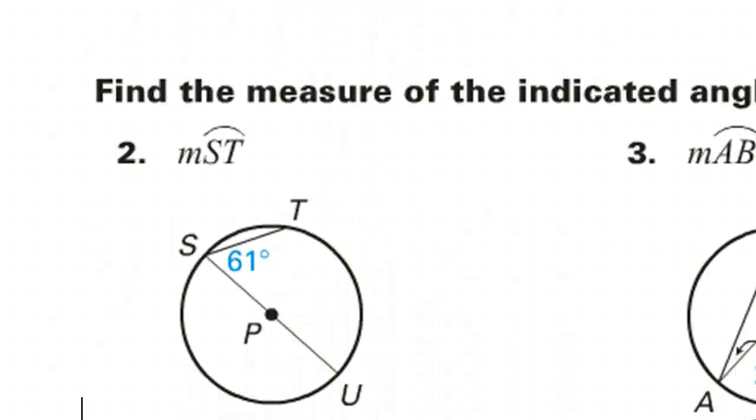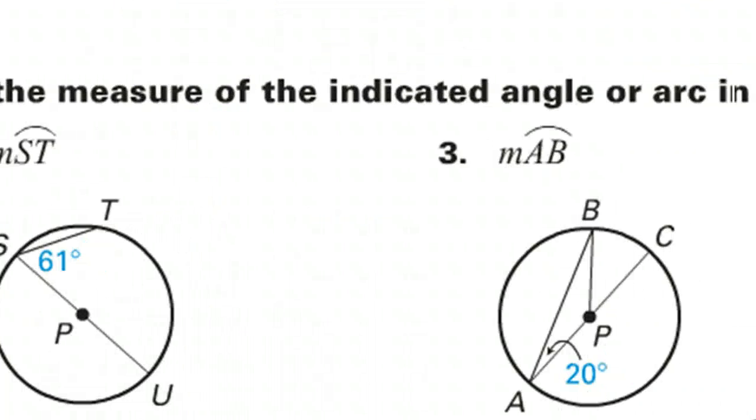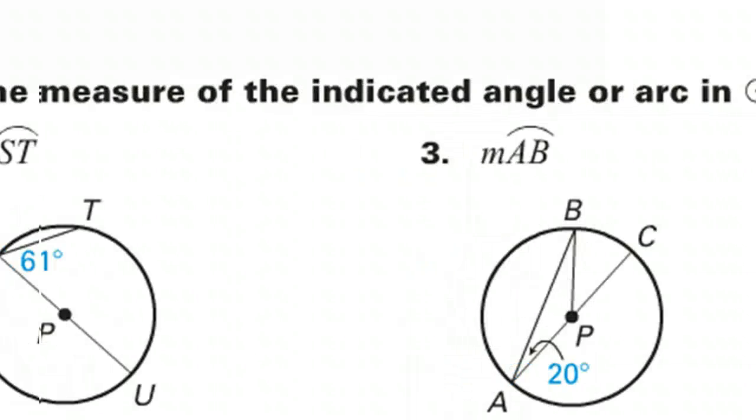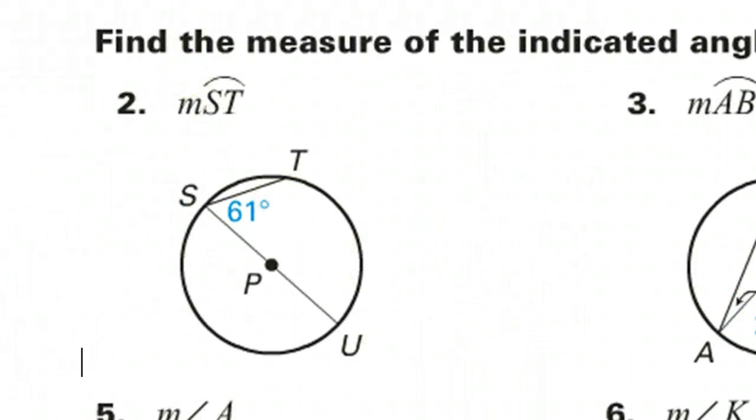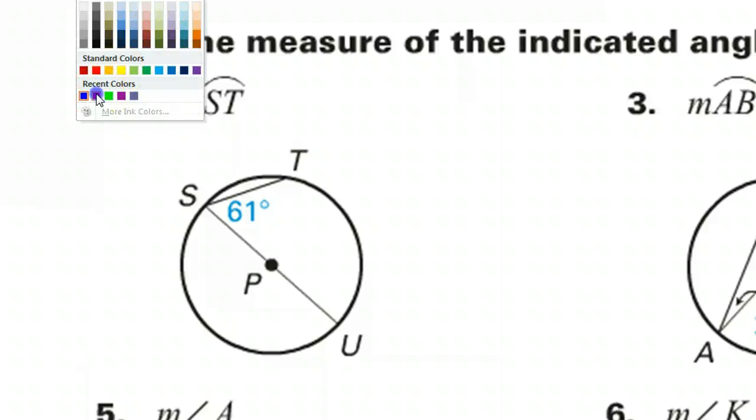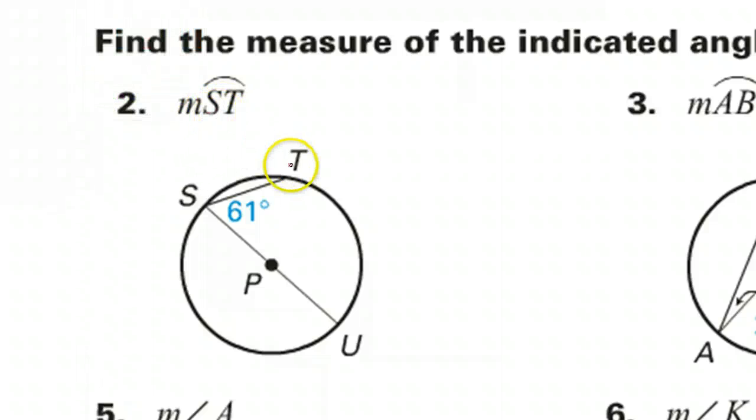Look at problem number two. Find the measure of the indicated angle or arc in circle P. We're supposed to find the measure of arc S-T. So we're supposed to find the measure of this.